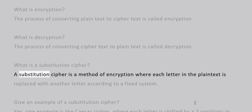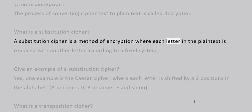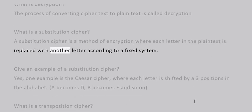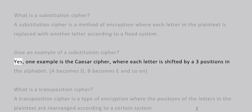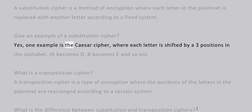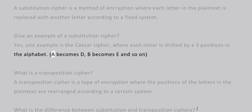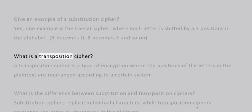What is a substitution cipher? A substitution cipher is a method of encryption where each letter in the plain text is replaced with another letter according to a fixed system. For example, the Caesar cipher shifts each letter by three positions in the alphabet — A becomes D, B becomes E, and so on.